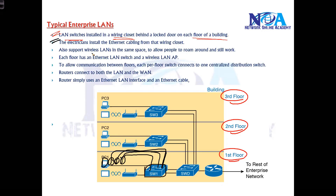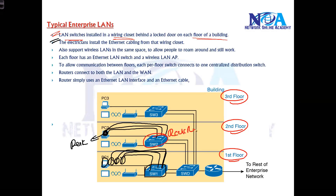Basically, electricians will install the Ethernet cabling. We don't really do that at the time of construction; it depends on how you require the network. You will have one end of the cable on your desk and the other end goes to the rack room, where you place all your switches and provide all the centralized connections.